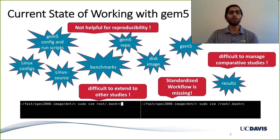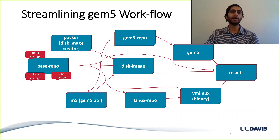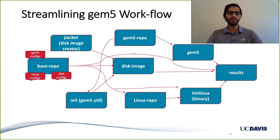The main job of Gem5Art is to reduce the probability of such errors. Gem5Art tries to identify the structure among different components involved in any experiment. In a full system simulation, different components feed other components and finally results are generated. Gem5Art tries to streamline this workflow and ensure all components are given a unique identity, stored in a database, and that interaction between components takes place in a standard way.